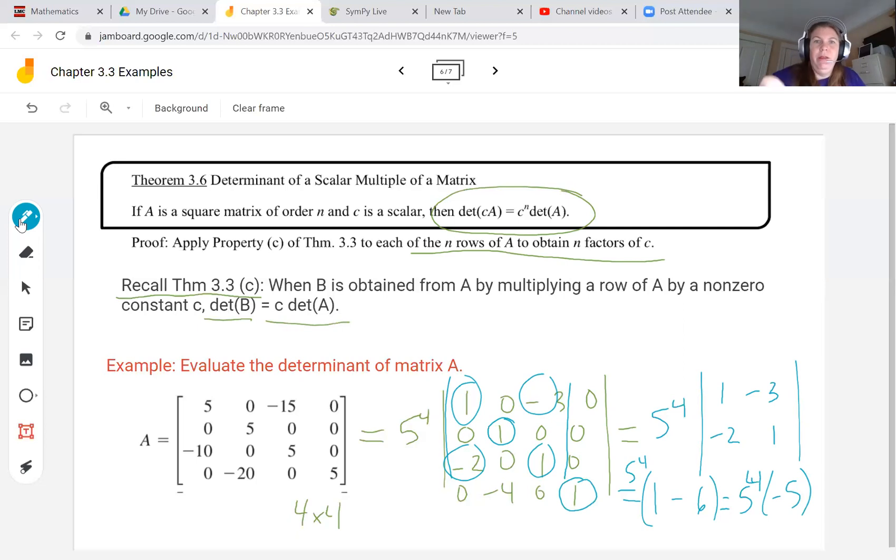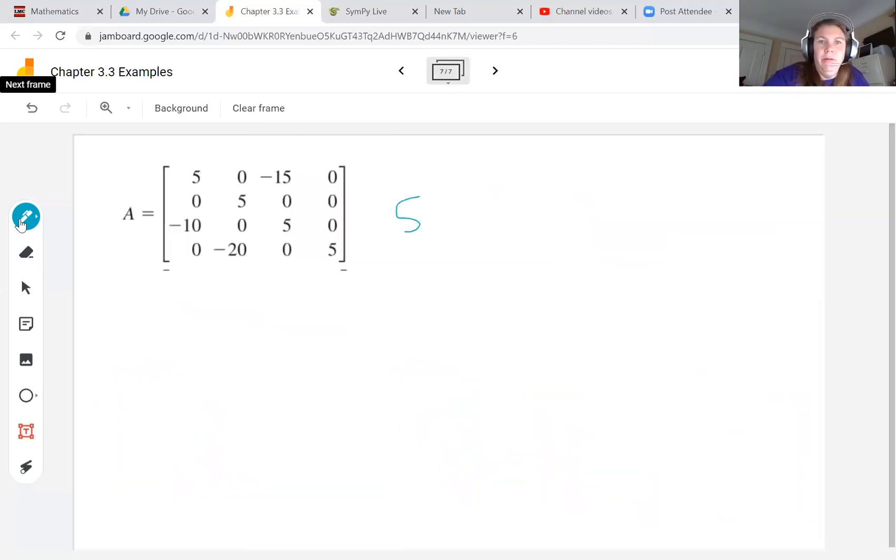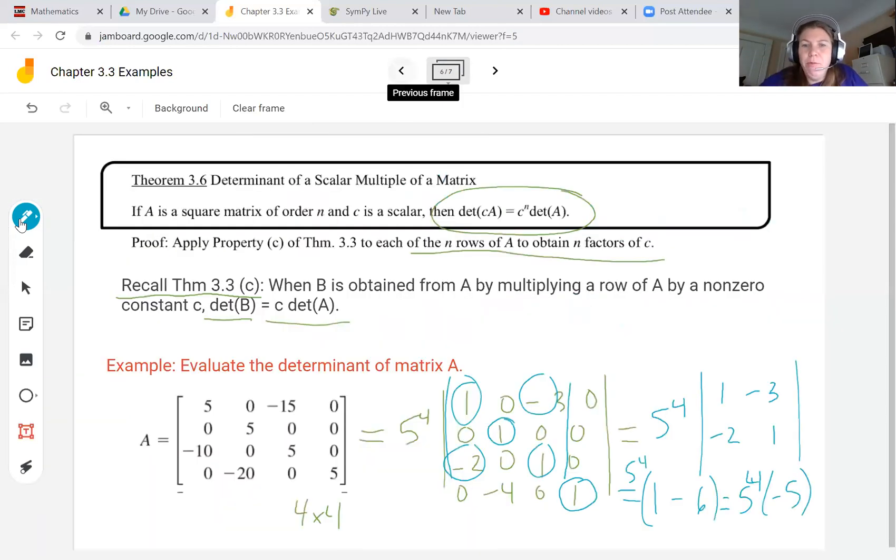This is 625, 5 to the fourth times negative 5. We end up with the determinant of A equals negative 3,125. By factoring out the 5 from each row and using 5 to the fourth, we were able to come up with an easier to calculate by hand determinant with the ones in there and the zeros in the other rows, so it became easy to work with. Let's go double check this in SymPy.